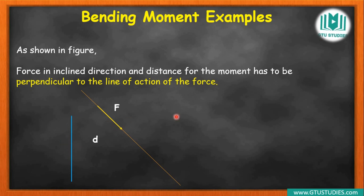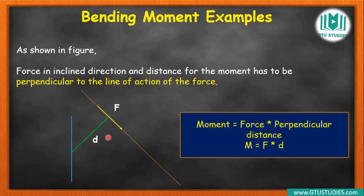To draw the perpendicular distance, draw a 90-degree line from the point to the line of action of the force. That 90-degree line is the perpendicular. Measure along that perpendicular line from the point to the line of action — that is the perpendicular distance D. Remember: if the force is horizontal, take the vertical distance; if the force is vertical, take the horizontal distance. For inclined forces, the perpendicular must be drawn at 90 degrees.